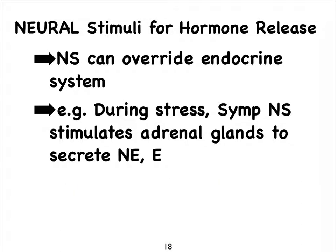Finally, we're all quite familiar with how the nervous system — the sympathetic nervous system — can override many controls, including those of the endocrine system. As shown in a previous video, your sympathetic preganglionic fibers can control the adrenal glands to secrete norepinephrine and epinephrine.